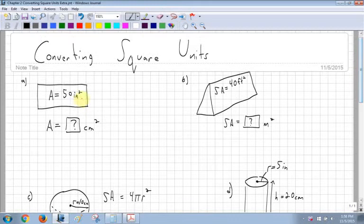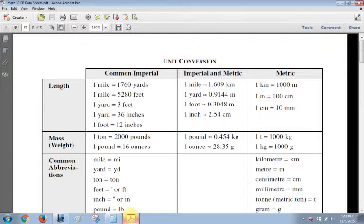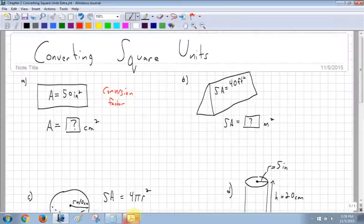So because we are converting square units, we have to make sure that we're looking at the conversion factor. So from inches to centimeters, our conversion factor, and you can look at your data sheets for that, from centimeters to inches, is 2.54. So my conversion factor is 2.54.